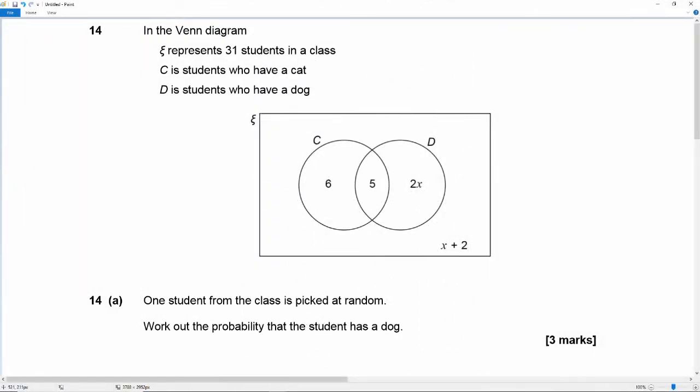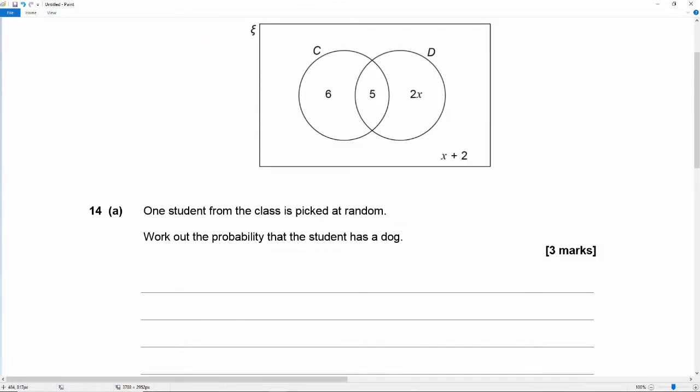And we're picking up in question 14 which reads, in the Venn diagram the universal set represents 31 students in a class. C is students who have a cat. D is students who have a dog. 14A says one student from the class is picked at random. Work out the probability that the student has a dog.